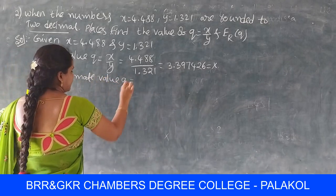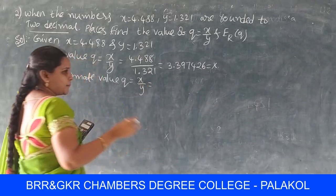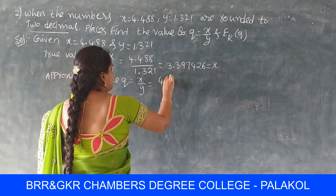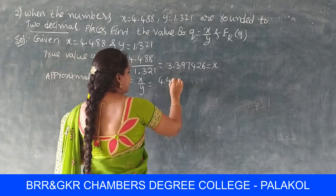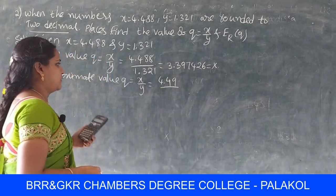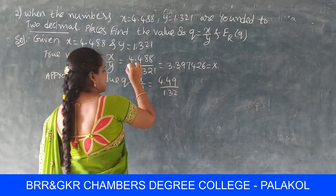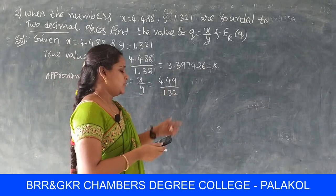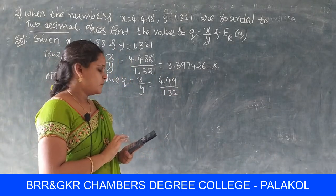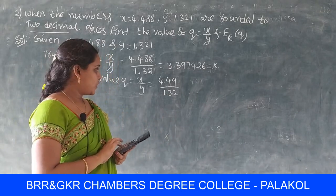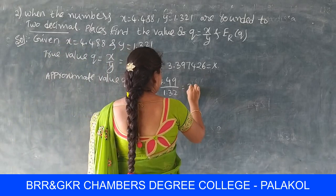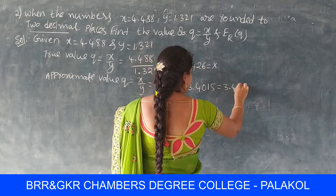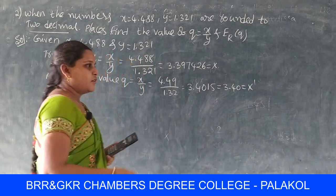Now find the approximate value of q = x/y, rounded to 2 decimal places. For x = 4.488, the digit after the second decimal is 8, which is greater than 5, so x rounds to 4.49. For y = 1.321, the third decimal is 1, which is less than 5, so y rounds to 1.32. Using the calculator, 4.49 ÷ 1.32 = 3.4015, which to 2 decimal places is 3.40. This is the approximate value X'.